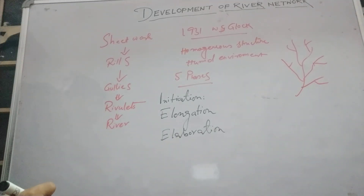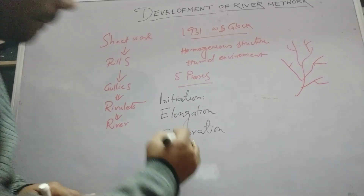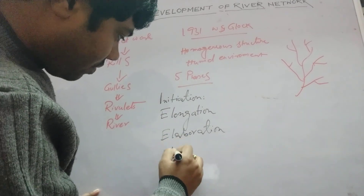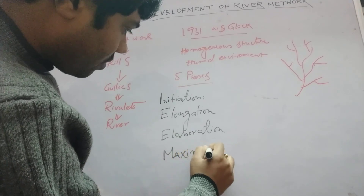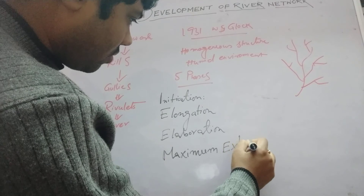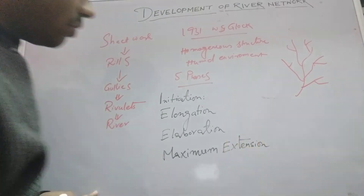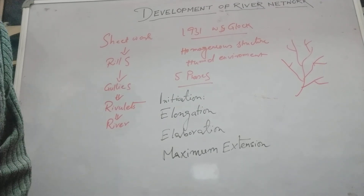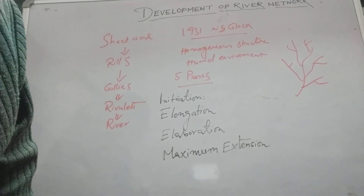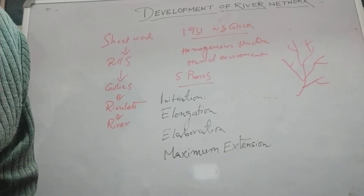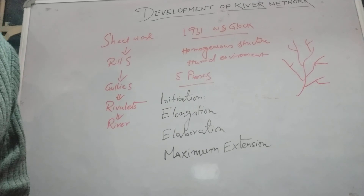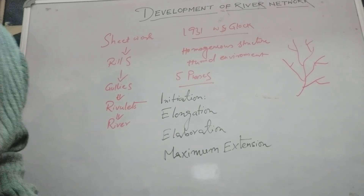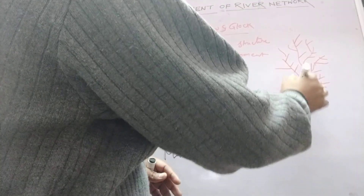Then comes the fourth phase: maximum extension. This is the phase where maximum extension occurs, where most of the drainage system — including the number of tributaries and sub-tributaries — increases in size. This is the phase where the density of the drainage is at its highest.